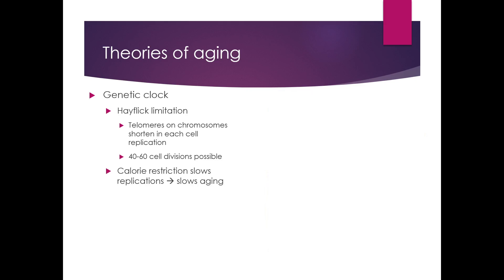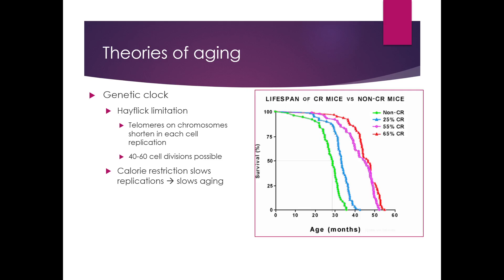On the genetic clock side, one of the things they argue is that you can slow aging through calorie restriction, because calorie restriction will actually slow the number of replications. You're still only going to do 40 to 60 replications, but they will occur with more distance between them, so you won't age as quickly.